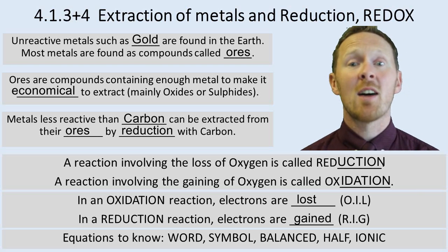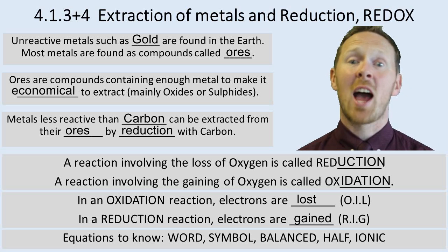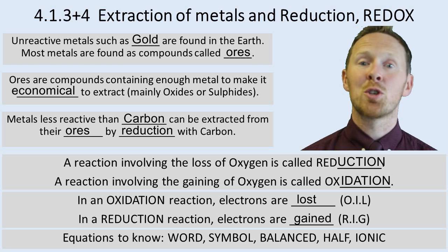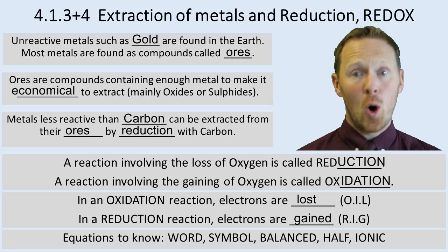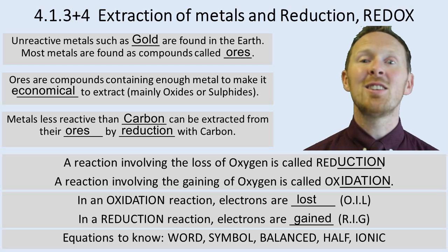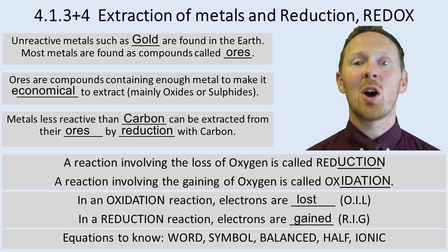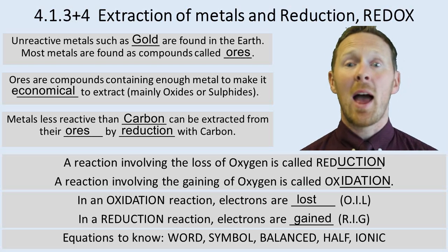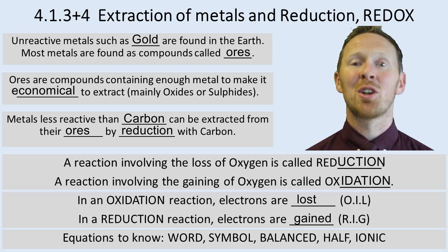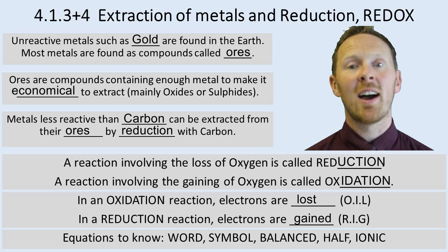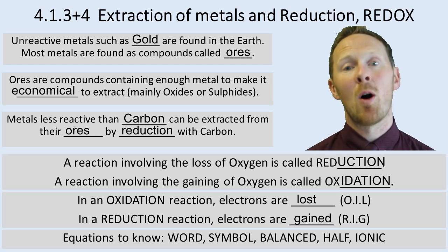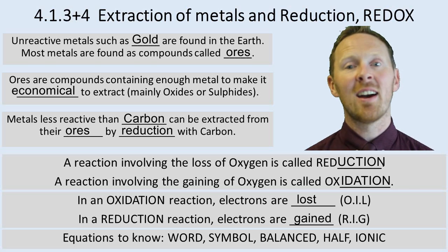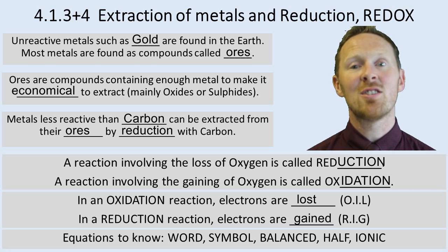You also need to be able to explain half equations. Half equations represent just half of a redox reaction — either the reduction part or the oxidation part. Finally, you need to know about ionic equations, where ions gain or lose electrons to form molecules. In electrolysis, for example, chloride ions Cl⁻ lose electrons to form chlorine molecules Cl₂, and hydrogen ions H⁺ gain electrons to form hydrogen molecules H₂.